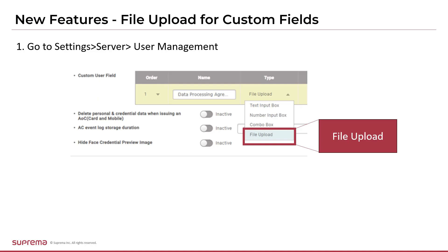Let's see how to set it up. After logging into Biostar 2, select Settings from the menu bar at the top, then select Server. Then, if you scroll down, you can find the custom user field menu. Here, click the Add button, select File Upload from the types of custom fields to use, and select the Apply button. Then Biostar 2 is ready to set up.